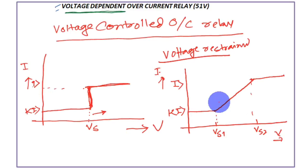These are the two types of voltage dependent overcurrent relays: the voltage controlled overcurrent relay and the voltage restrained overcurrent relay. In the next video, I will show a typical example so you can clearly see how these relays operate. I hope you have enjoyed the operating principle and basic selection criteria. Please like, share, comment, and subscribe to our channel, and hit the bell icon for the latest notifications. Thank you very much for watching.